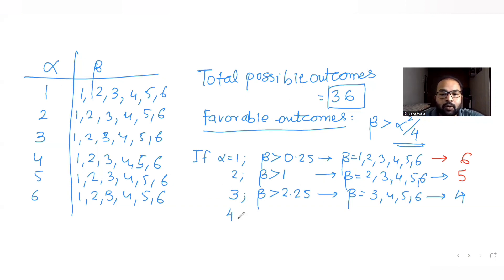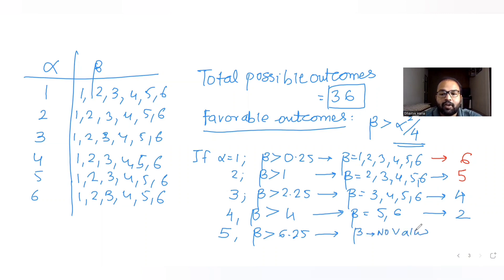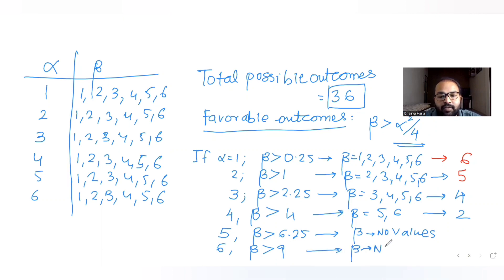If alpha is 4, beta must be greater than 16/4 = 4. So beta can only be 5 or 6 — just 2 outcomes. If alpha is 5, beta must be greater than 25/4 = 6.25. No value of beta from 1 to 6 satisfies this, so there are 0 favorable outcomes. Similarly, if alpha is 6, beta must be greater than 36/4 = 9, which is also impossible — 0 outcomes.